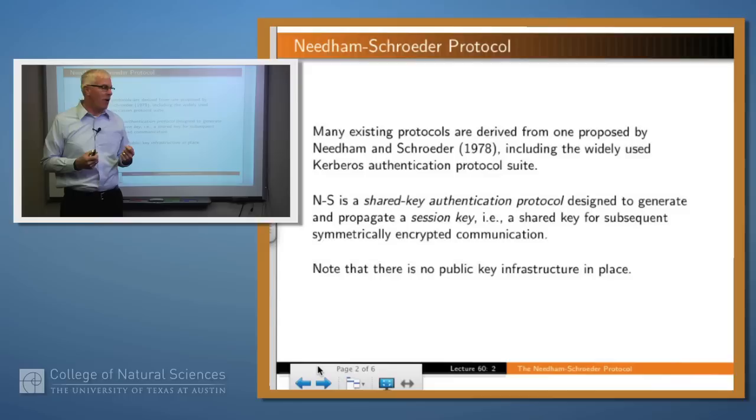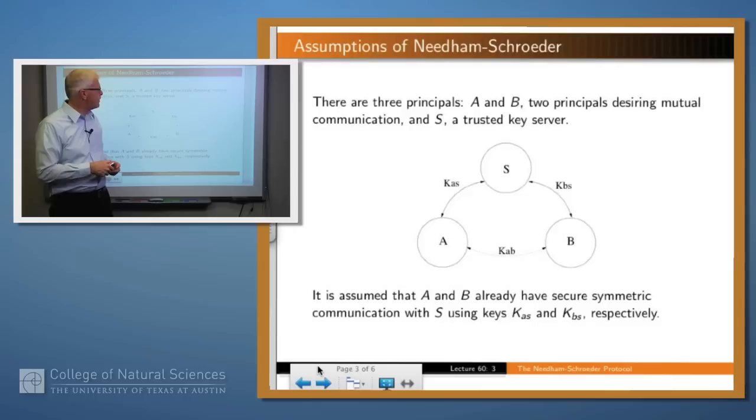Needham and Schroeder is what's called a shared key authentication protocol. This is prior to the public key stuff and so there are no public key encryption anywhere in sight. We're using symmetric encryption everywhere. The idea of this protocol is that two parties, A and B, want to talk to one another but they don't share a key and so they have to propagate a key so that they can engage in secure symmetric communication.